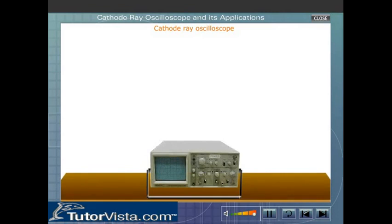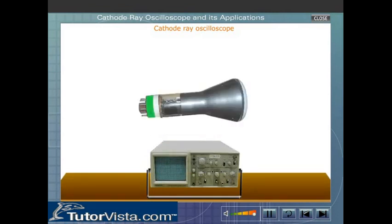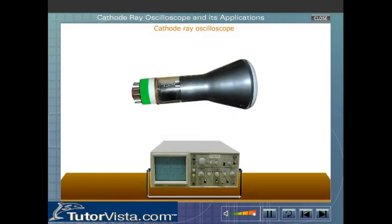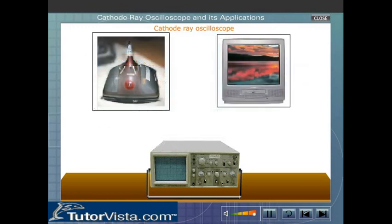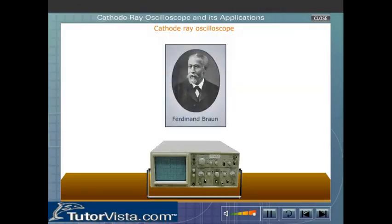Cathode ray oscilloscope is similar to a discharge tube in many ways. It is widely used in acoustic research, television production, engineering to study wave motion, and in electronics. The German physicist Ferdinand Braun developed the first cathode ray oscilloscope in 1897. Click on the oscilloscope to view its internal parts.